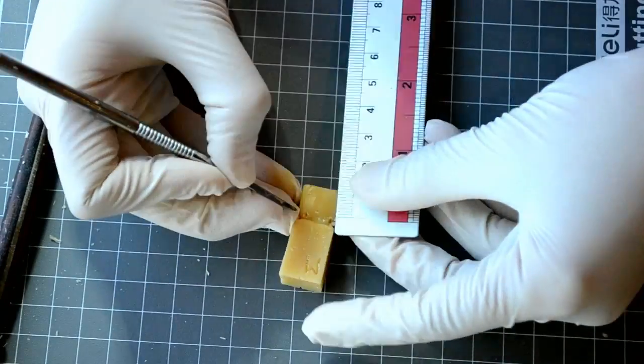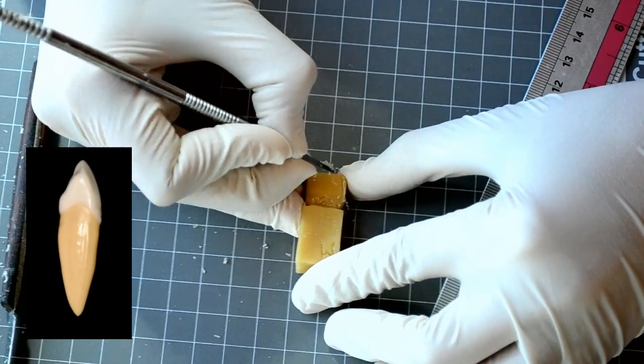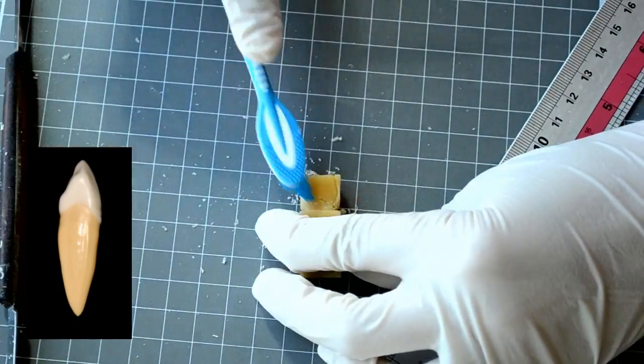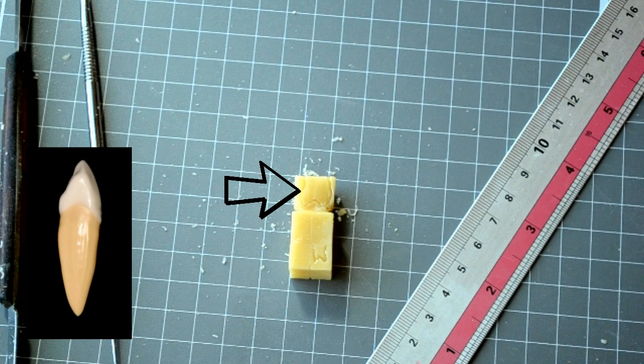You are now ready to draw the tooth outline using your Lecron carver. Keep in mind the shape of the crown from the mesial aspect: labial outline being slightly convex, while the lingual outline is convex at the cingulum, concave at the mesial marginal ridge, then slightly convex at the incisal edge,